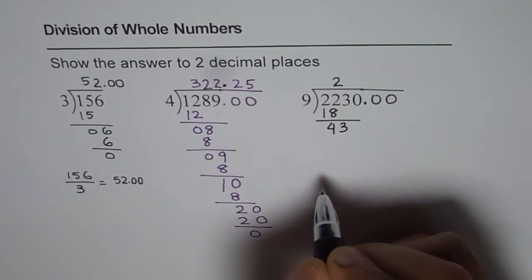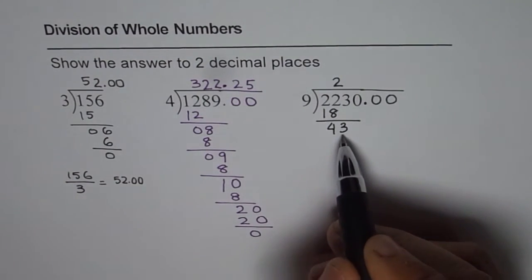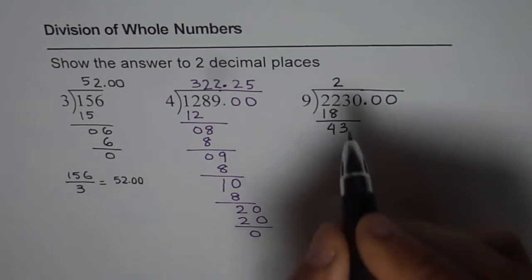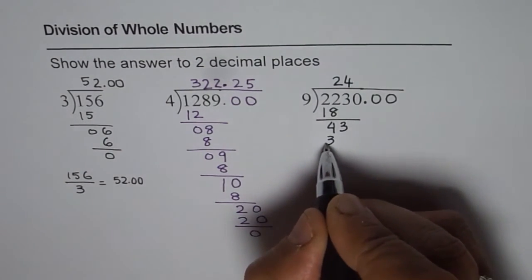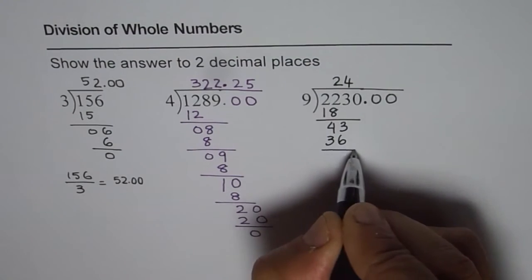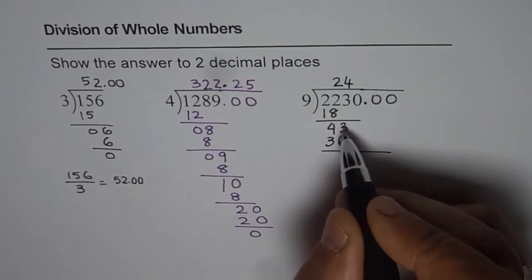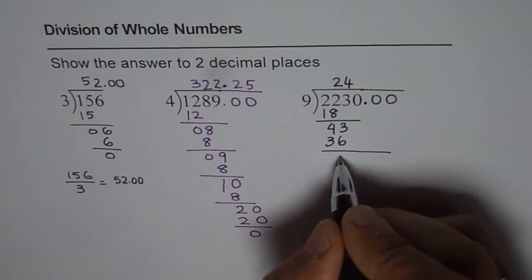9 times 5 is 45, slightly more, so we will use 4. 9 times 4 is 36. When you take away 36 from 43 what do you get? You get 7.